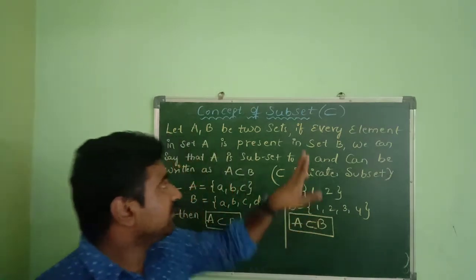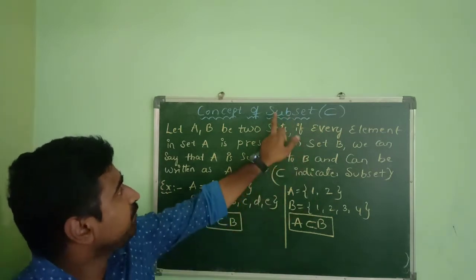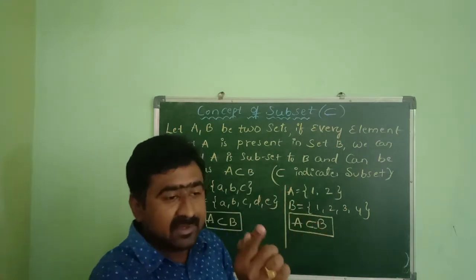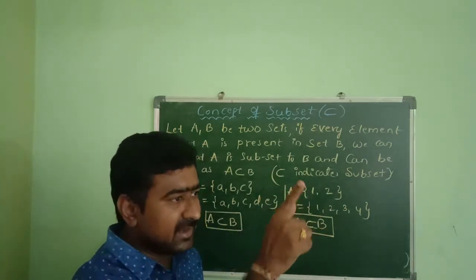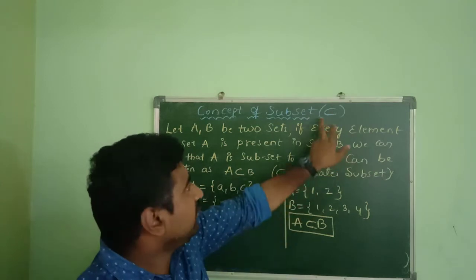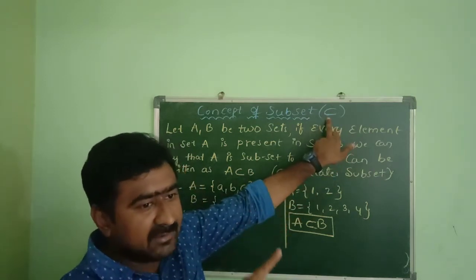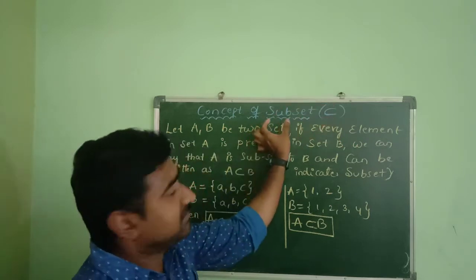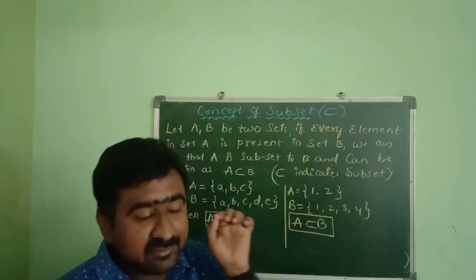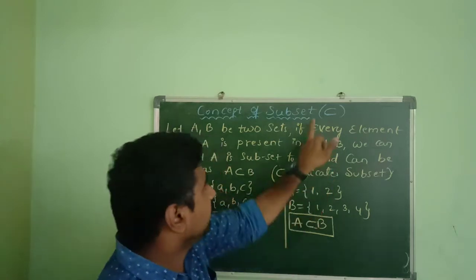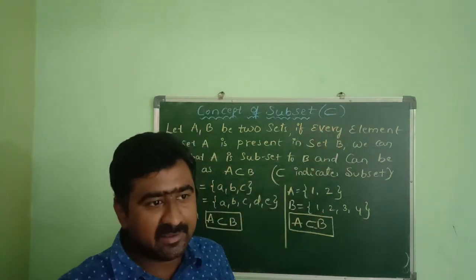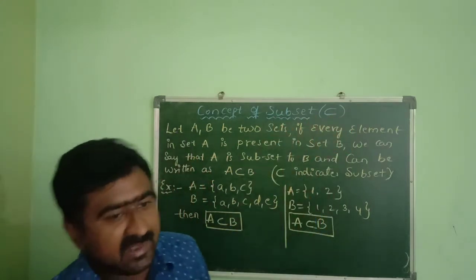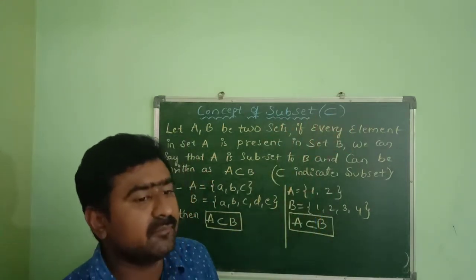First we observe the subset symbol. The subset symbol is in an oval shape. We must highlight it in the oval shape. That is the symbol used to denote a subset. Now, what do you mean by the word subset?